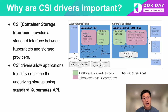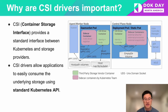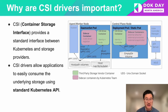First of all, why are CSI drivers important? CSI stands for Container Storage Interface. It provides a standard interface between Kubernetes and storage providers, which makes it easier for different storage providers to deploy and manage storage on Kubernetes clusters. As the diagram shows, a typical Kubernetes CSI driver consists of a couple of components that allow Kubernetes to communicate with and manage storage providers. The CSI driver allows developers to easily consume the underlying storage using standard Kubernetes APIs such as persistent volumes, persistent volume claims, and CSI ephemeral inline volumes.